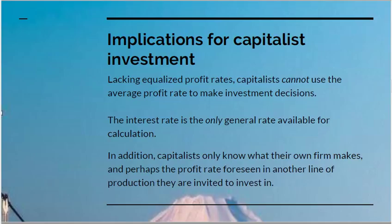What does this imply for capitalist investment? If there isn't an equalised rate of profit, capitalists can't use the average profit rate as a basis for making investment decisions. The only uniform rate available to them is the interest rate — it's the only general rate available for calculations. The interest rate is what you pay to the banks and is quite distinct from the rate of return on actual physical invested capital. In addition, capitalists don't know what other firms are making. They know what their own firm makes, and they may receive confidential information about a foreseen rate of profit in another firm, but they don't have general knowledge of it. They can't look up the general rate of profit, but they can look up the general rate of interest.